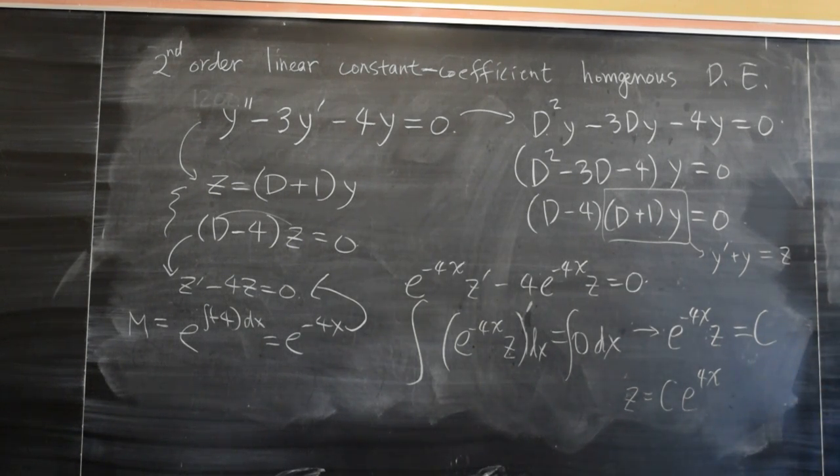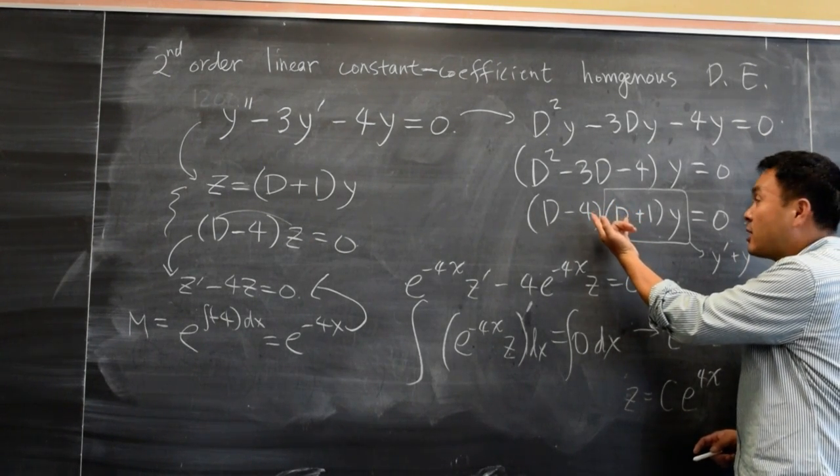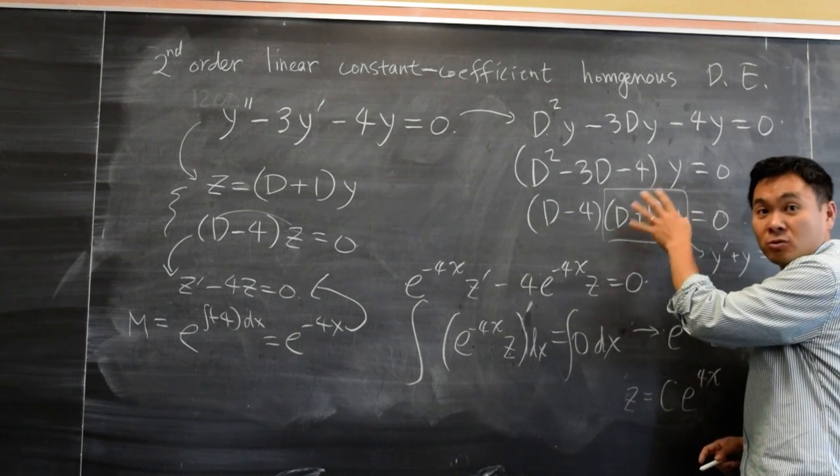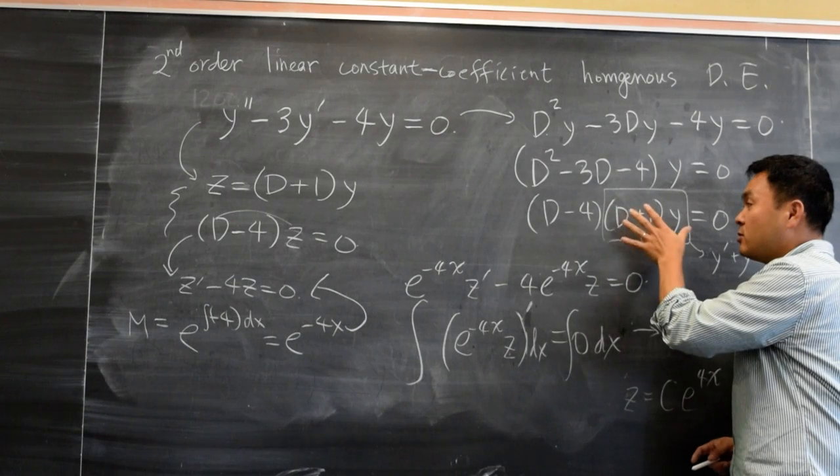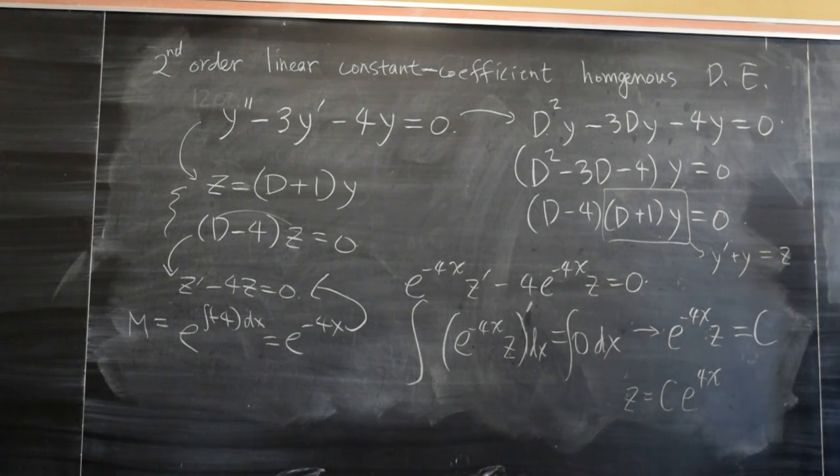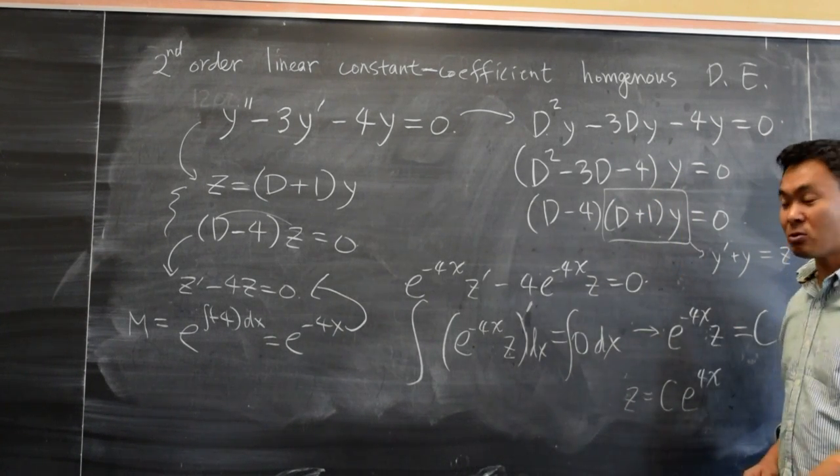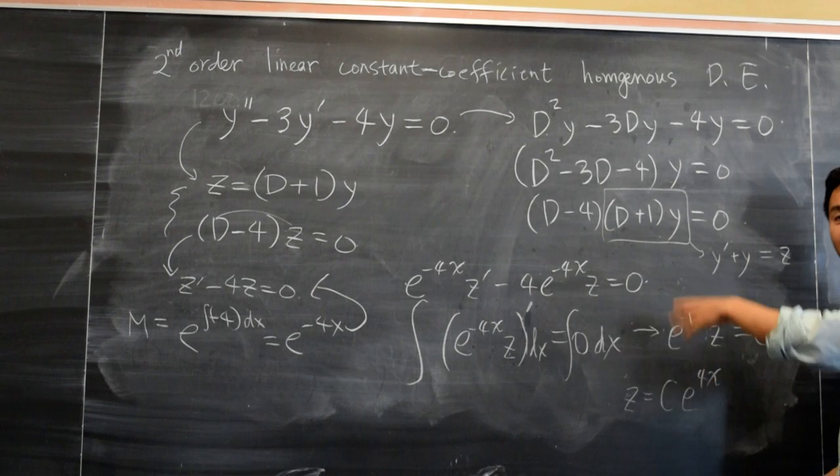Student: Would it work out the same way if you put (D minus 4) times y equals z? You chose (D plus 1) times y to become y prime plus y equals z. Had you done (D minus 4) times y equals z, would you get the same answer? Instructor: What you can do is you can switch these two around and then define z as (D minus 4) times y equal to z, and say (D plus 1) times z equals 0 and you solve it, you're going to get another value for z. But at the end of the day, you're going to get the same answer. So his question was, what if your factoring was the opposite? What if it was (D plus 1) times (D minus 4)? When you're solving it, it might look different here, but at the end of the day, you're going to get the same answer.